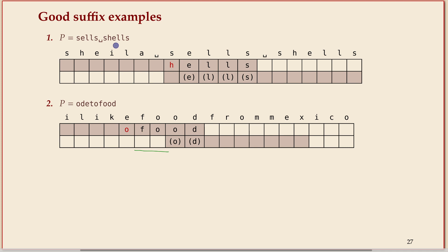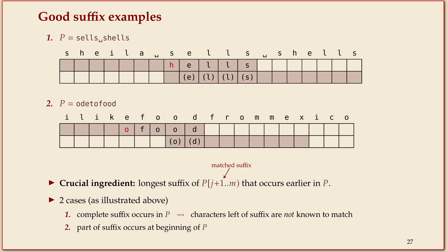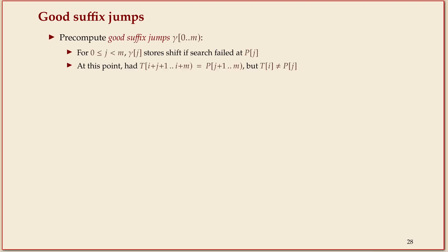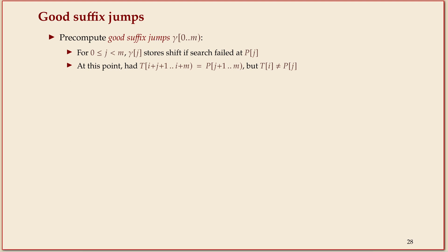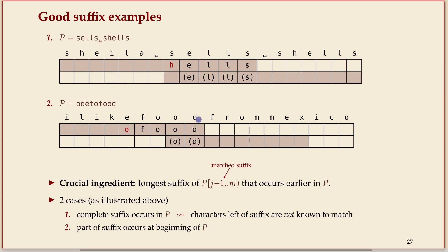So the two cases are: either you find the good suffix entirely within the pattern at another position, or you find part of the good suffix as a prefix of the pattern. In both cases, you find the longest suffix of the matched portion that occurs earlier in the pattern — these are the two cases. The key idea is to find the part you matched in the pattern again, and the last occurrence of that is where you shift to.